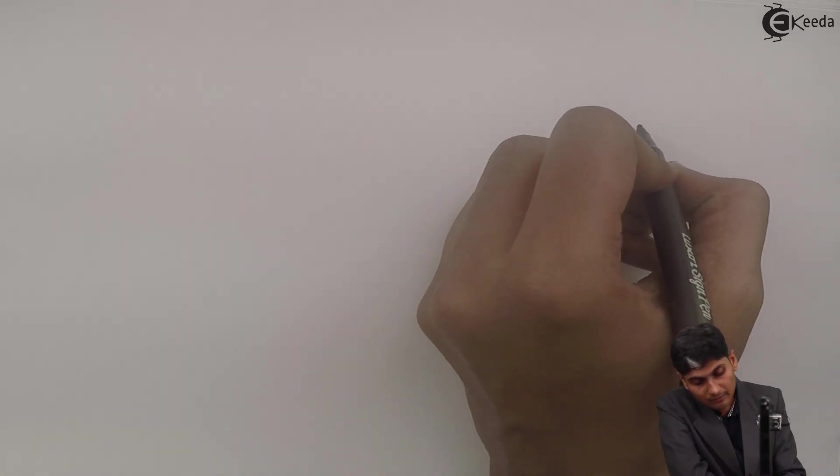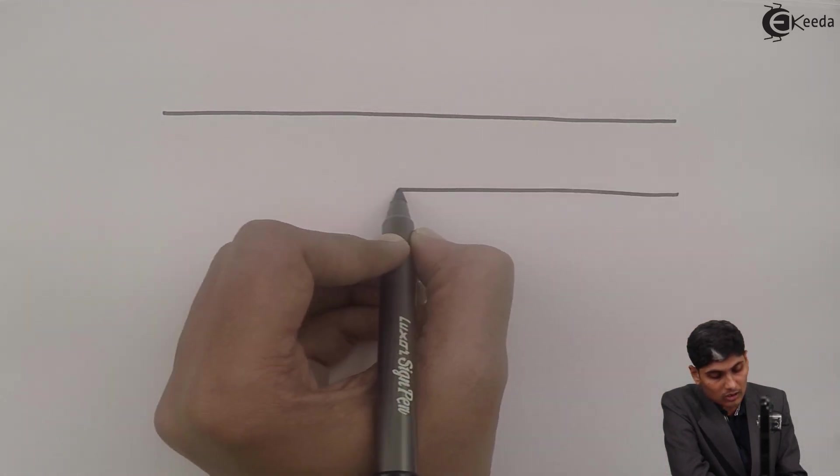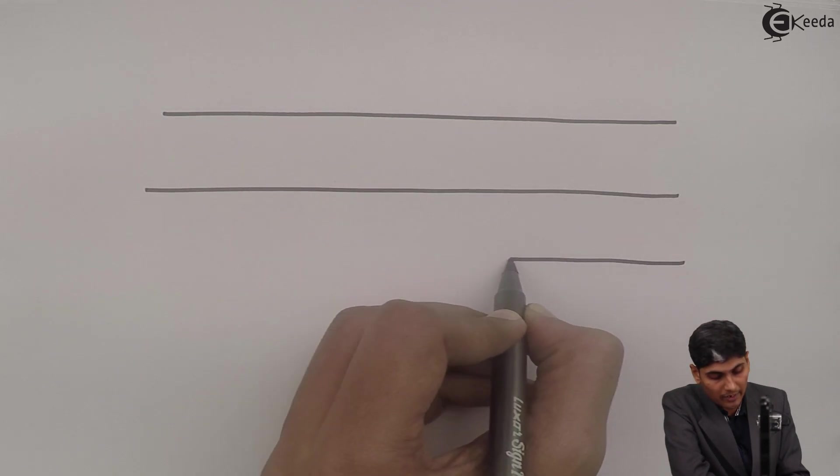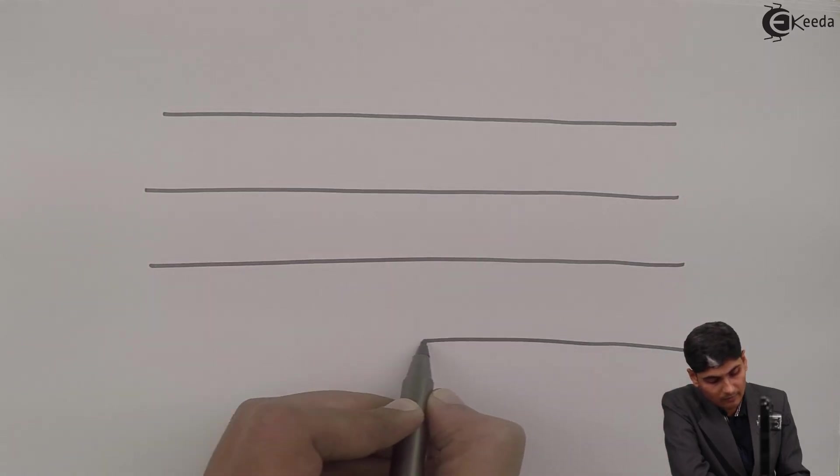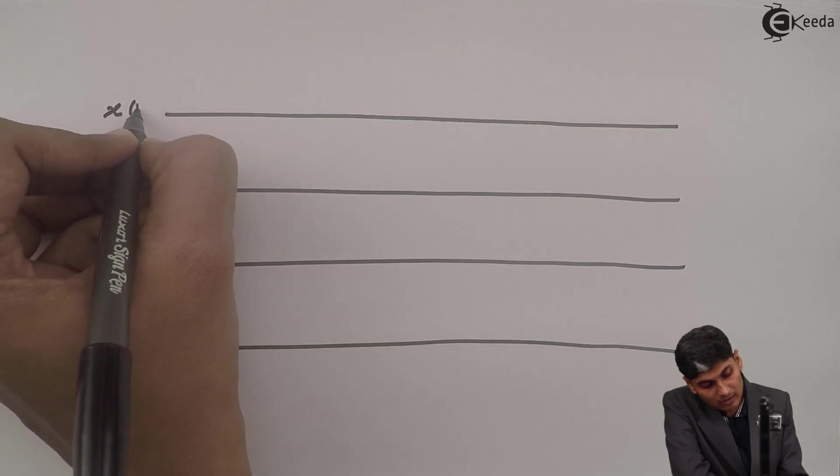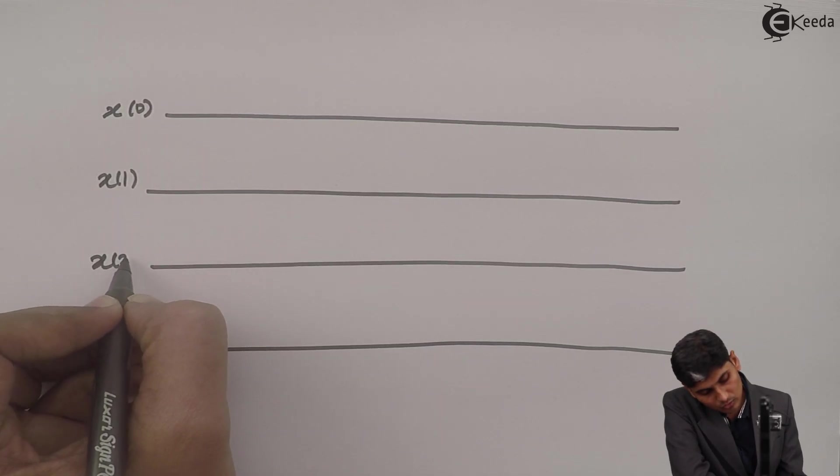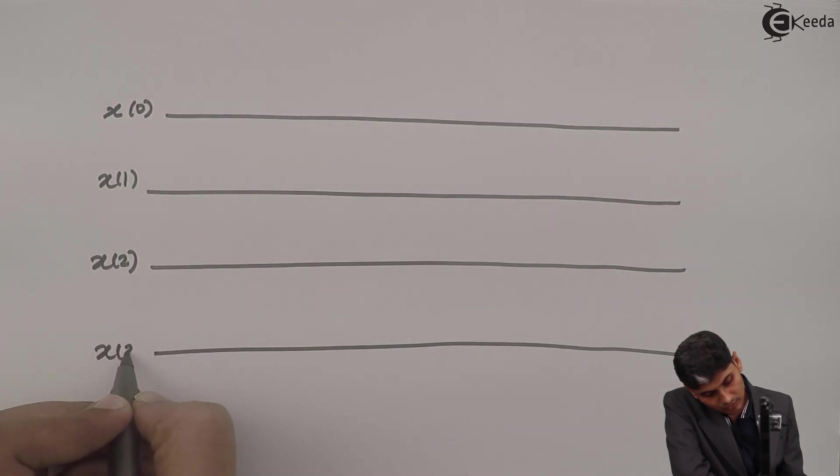So let us draw the final graph, how it will look like. So it will have again 4 total data flows, points. Here I will put x of n, which is x of 0, then x of 1, then x of 2 and x of 3.